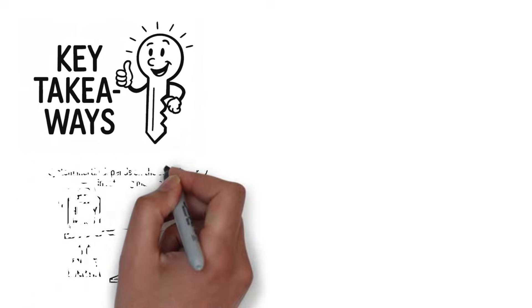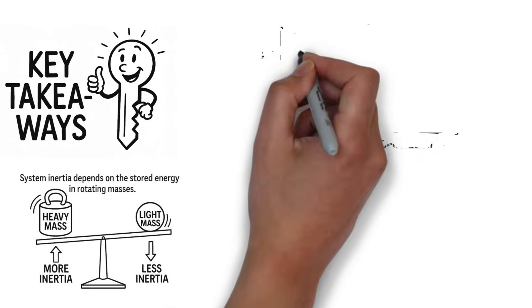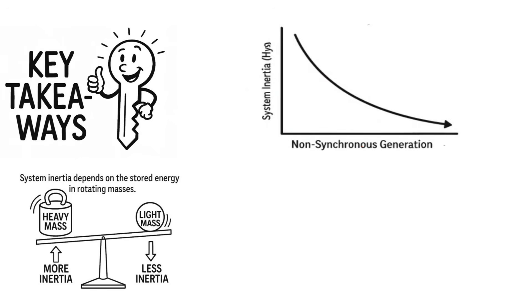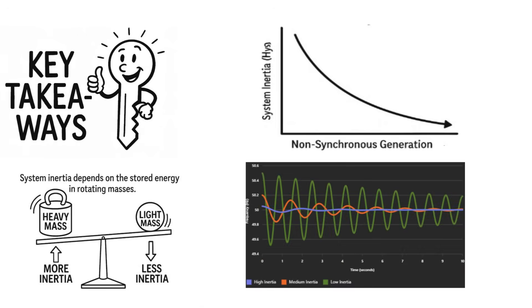And here's the key takeaway. More renewables equals less inertia. Higher inertia equals a more stable grid. When inertia is high, frequency stays steady. When it's low, the grid becomes vulnerable to wild fluctuations.